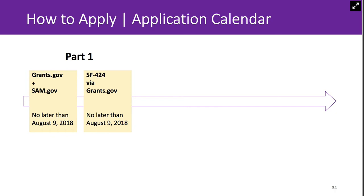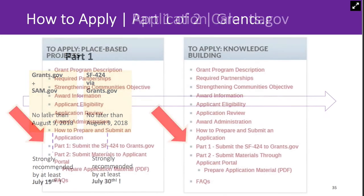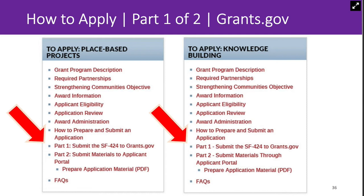Looking again at the application timeline: Part 1 involves registering or renewing and verifying with Grants.gov and SAM, or the System for Award Management, and submitting the SF-424 form through Grants.gov. The Part 1 deadline is August 9th. However, we strongly recommend that you jump on these processes immediately, especially because SAM registration now requires a notarized letter. These systems are not overseen by the NEA—they serve the entire federal government. So if you encounter a delay with these systems, unfortunately there's nothing that we at the NEA can do.